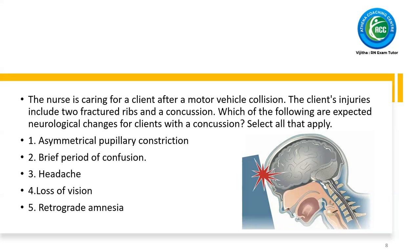In terms of safety, a number of questions will be asked. The client's injuries include two fractured ribs and concussion. Which of the following are expected neurological changes for the patient with a concussion? What is concussion? Concussion is what we learned — like a cord injury — and counter cord injury is indicating concussion.